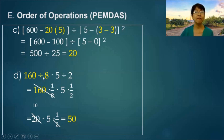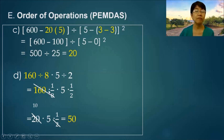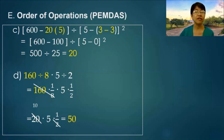Letter D: 160 divided by 8 times 5 divided by 2. First, we get the reciprocal of 8 and change the operation to multiplication. We also get the reciprocal of 2 and change that operation to multiplication. Dividing 160 by 8 gives 20. Then 20 divided by 2 gives 10, and 10 times 5 is equal to 50.